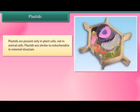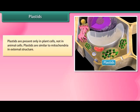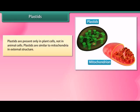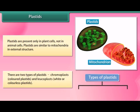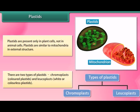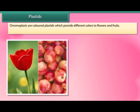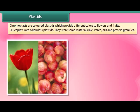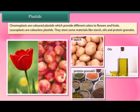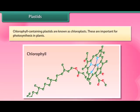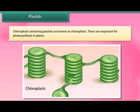Plastids are present only in plant cells, not in animal cells. Plastids are similar to mitochondria in external structure. There are two types of plastids: chromoplasts, which are colored plastids, and leucoplasts, which are white or colorless plastids. Chromoplasts provide different colors to flowers and fruits. Leucoplasts are colorless and store materials like starch, oils, and protein granules. Chlorophyll-containing plastids are known as chloroplasts, which are important for photosynthesis in plants.